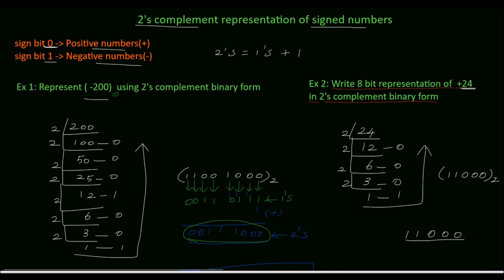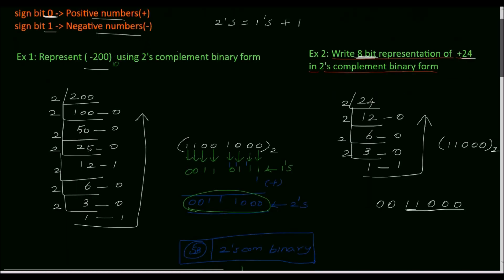The binary equivalent of decimal 24 is 11000, which is 5 bits. Including the sign bit, we get 6 bits total. But the question requires 8-bit representation, so we add two more zeros on the leftmost side. This does not change the value, giving us 00011000.